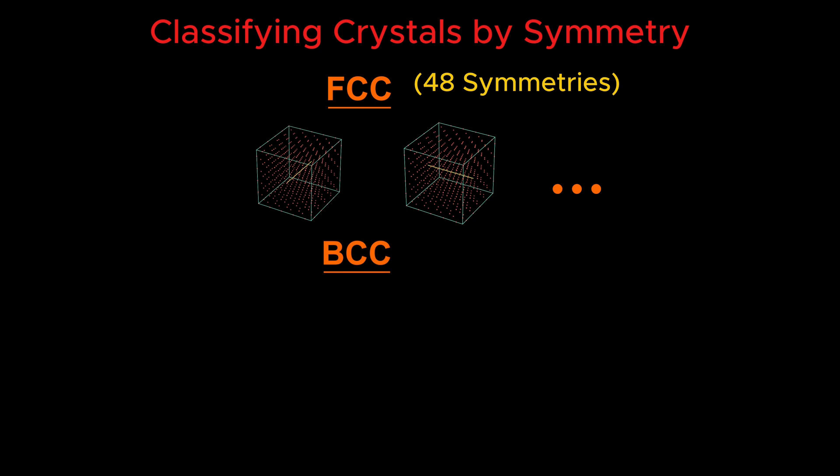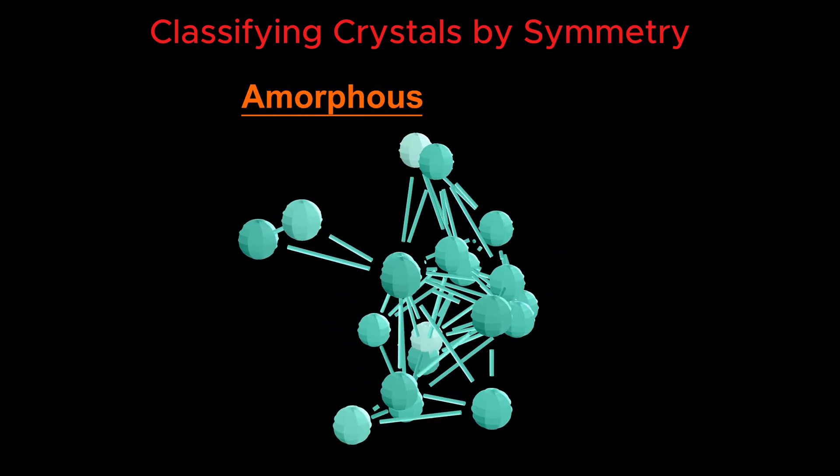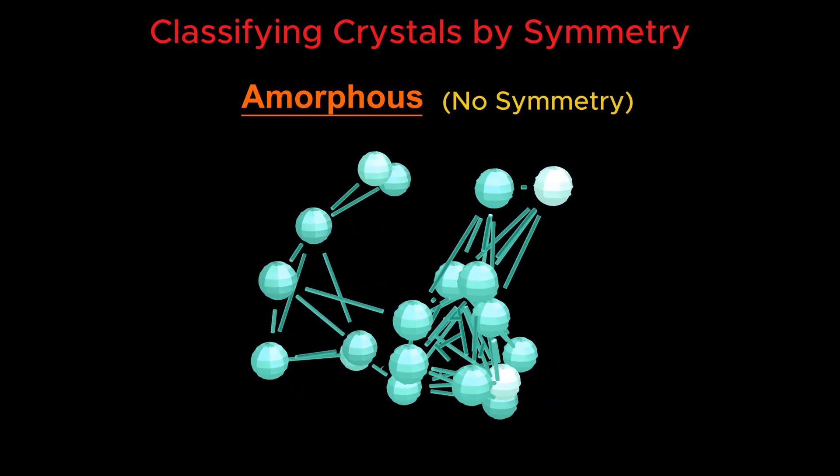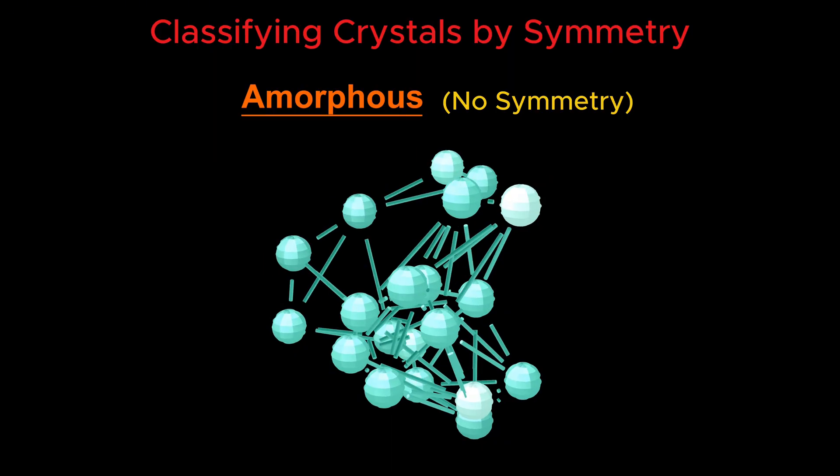BCC crystals have slightly fewer symmetries. HCP even fewer. And amorphous solids—they have almost no symmetry at all. No translational or rotational symmetry. Pure randomness.